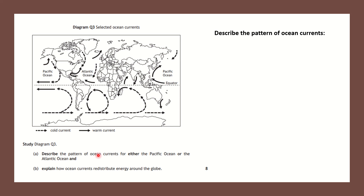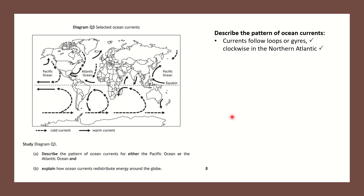The first thing we need to do is describe their pattern. Broadly, the currents move in a clockwise spin, and the name for that is a clockwise gyre — G-Y-R-E. The currents flow in loops, otherwise known as gyres, clockwise in the Northern Atlantic. There's a mark for knowing they flow in loop-like gyres, a mark for knowing the direction, and a mark for naming the ocean. In the Southern Atlantic or Pacific, it works in reverse — you see anti-clockwise gyres in the Southern Pacific. Clockwise in the North Atlantic.